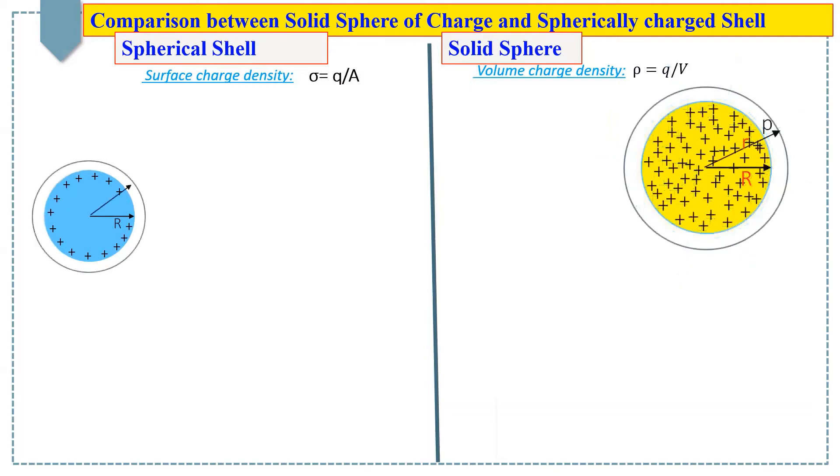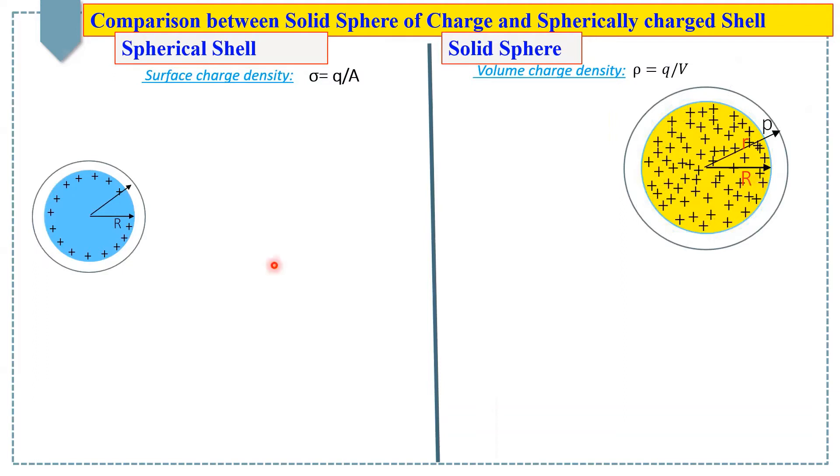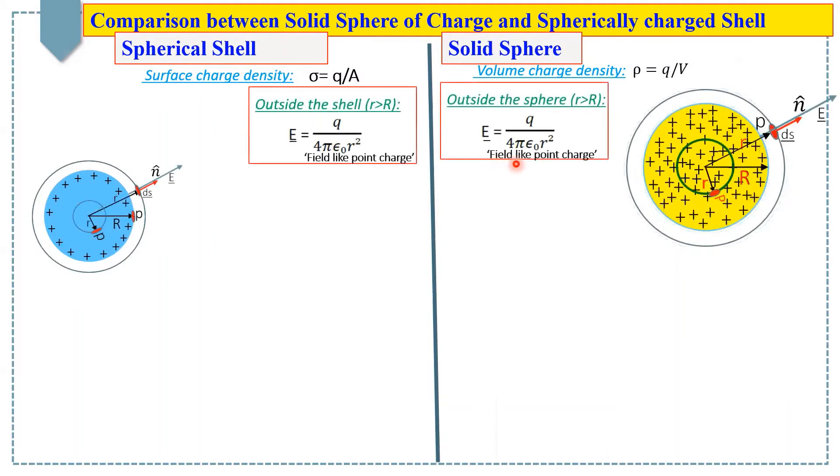In the first case, while finding the electric field outside of the solid sphere and shell, we find that the electric fields of both are just like that for a point charge.